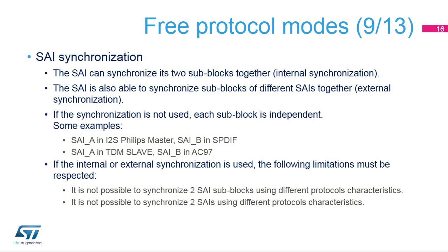The internal synchronization can be used for communications needing two data lanes, such as full duplex I2S. The external synchronization can be used for communications needing more than two data lines, up to four, for example when interfacing HDMI ICs. All the sub-blocks synchronized together must use the same protocol characteristics.